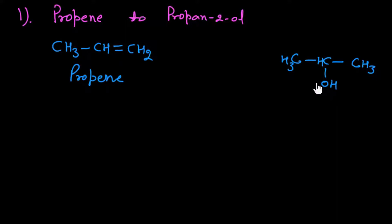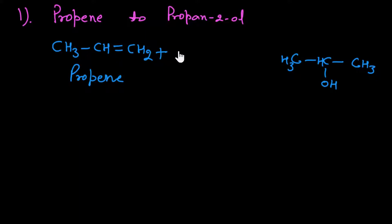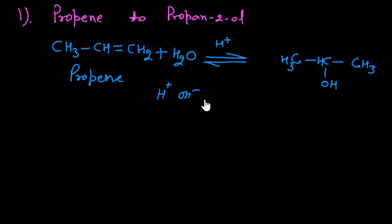One very important reaction here is Markovnikov's rule. For unsaturated hydrocarbons — unsymmetrical alkenes with a double bond — we had done addition of HBr and also addition of H₂O. So to complete this conversion in one step, we apply Markovnikov's rule by addition of a water molecule in acidic conditions. In acidic conditions, water ionizes into H⁺ and OH⁻.